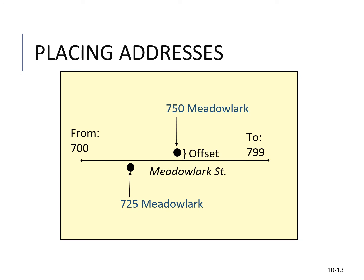Placing an address is one of the important parts of making a match. You can see here that there's an offset, which means the point doesn't touch the line. You have address ranges like 750 and 725 on an arc, with lower addresses going one way and higher addresses going the other way.